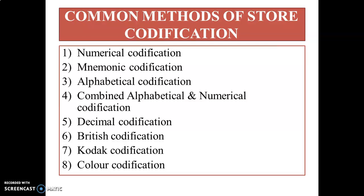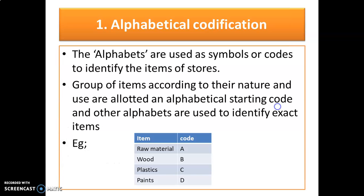The common methods of codification include eight methods: numerical codification, mnemonic codification, alphabetical codification, combined alphabetical and numerical codification, decimal codification, British codification, Coder codification, and color codification.